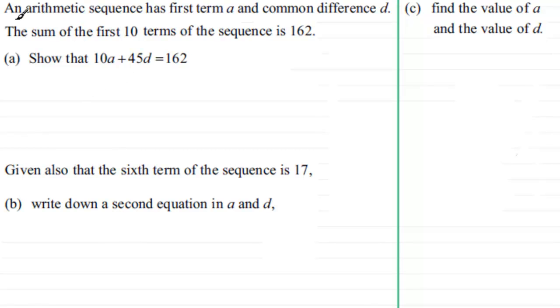So we've got an arithmetic sequence which has a first term A and a common difference D. And the sum of the first ten terms of the sequence is 162. And for the first part A, we've got to show that 10A plus 45D equals 162.